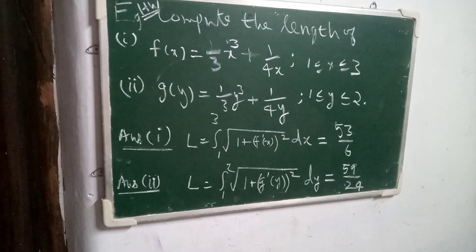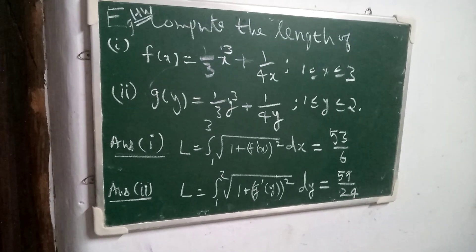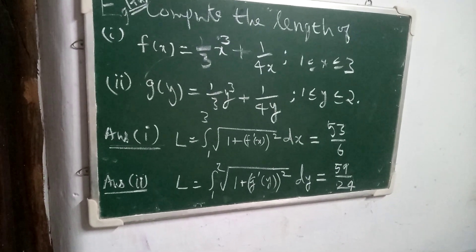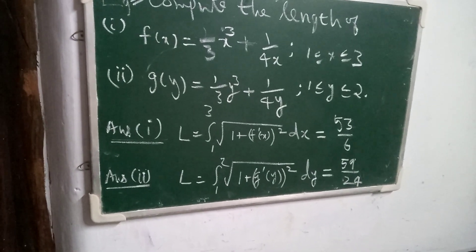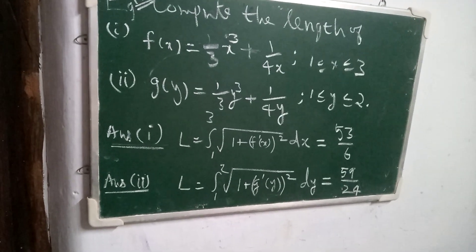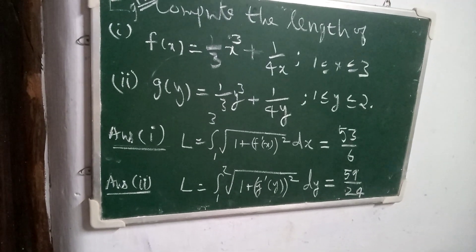Next, take these two homework problems and find the lengths. First, f(x) equals 1/3 x³ plus 1/(4x), where x varies from 1 to 3.